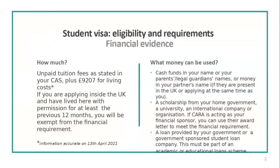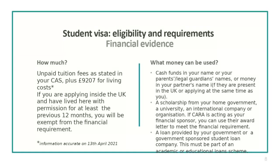In terms of financial evidence, you need the unpaid tuition fees stated in your CAS plus £9,207 for living costs. That information is accurate as of today, though immigration law in the UK is very changeable. If you are applying from inside the UK and have lived here for at least 12 months with a valid visa, you will automatically meet the financial requirements and do not need to submit evidence of your funds — that's another useful change introduced with the Student Route.